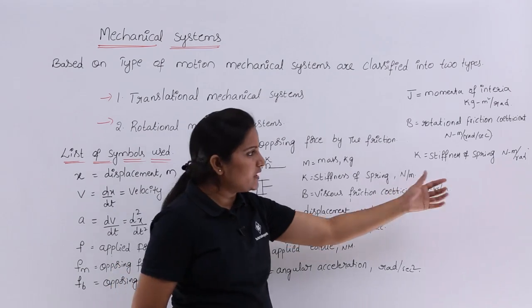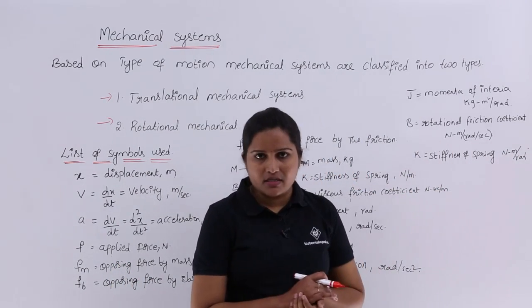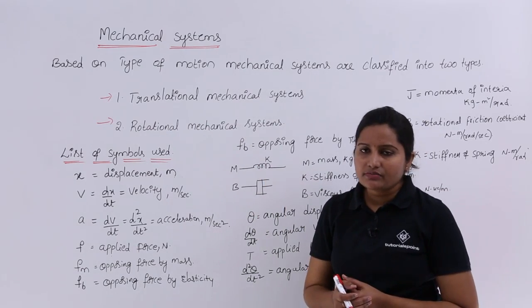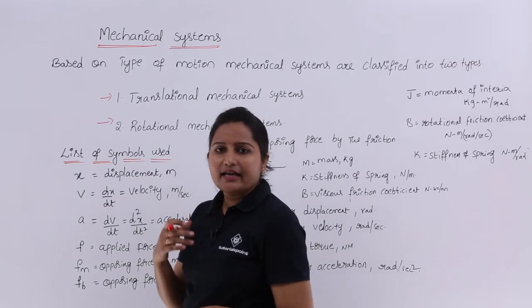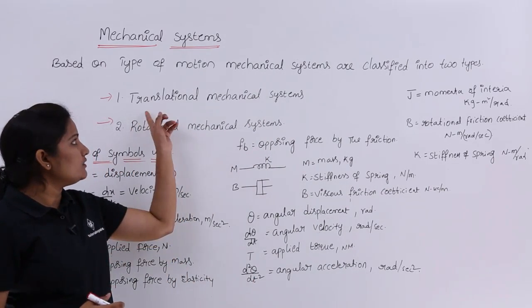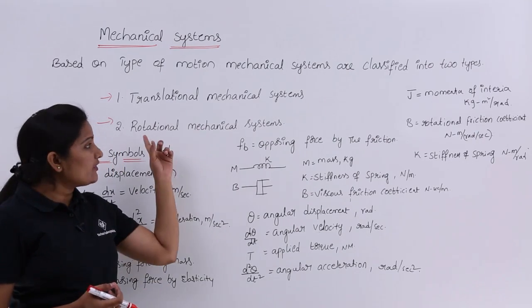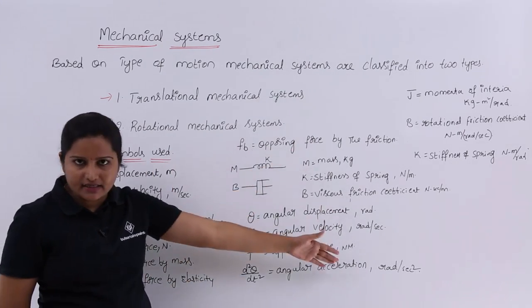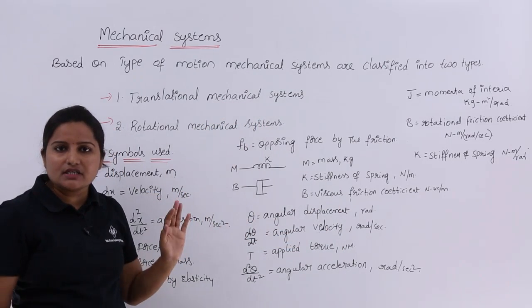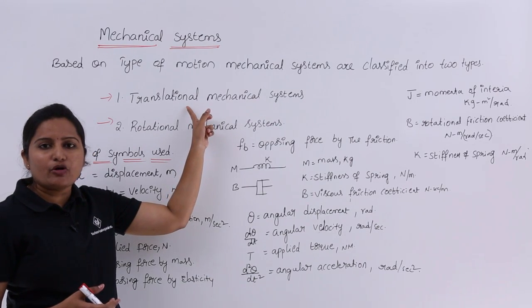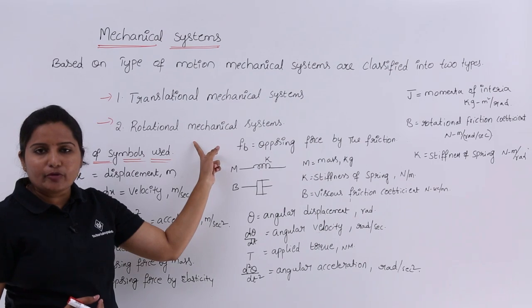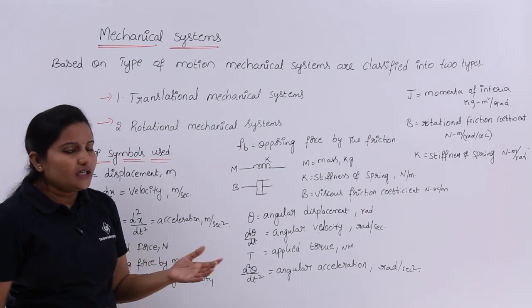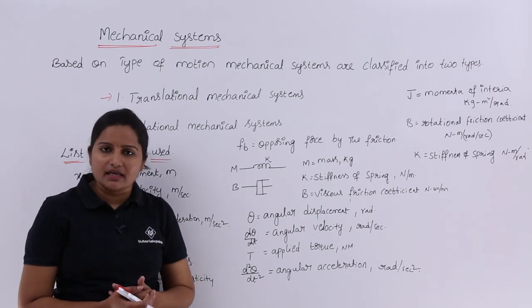In rotational systems, the unit of K is Newton-meter per radian. These are the list of symbols used in both translational and rotational mechanical systems. Generally, mechanical systems are classified according to their motion — if they move along a line, they are translational; the basic elements are mass, spring, and dashpot. For rotational systems, the basic elements are moment of inertia, torsional spring, and dashpot. We will cover each of these in detail from the next class onwards.